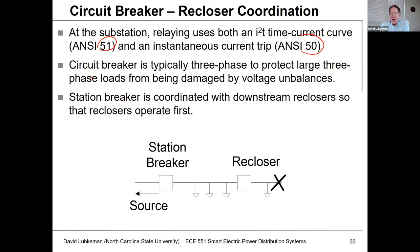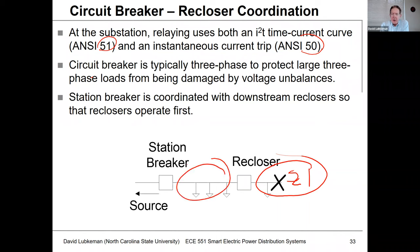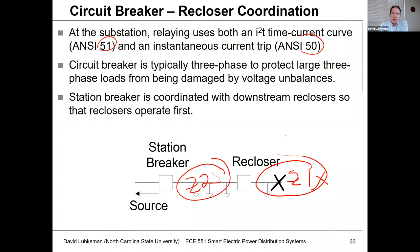As far as coordinating with downstream reclosers, we want the recloser to handle any faults below that device. In this simple example, the recloser protects zone one and the breaker protects zone two. Anytime there's a fault in zone one, we want the recloser to operate first so upstream customers are not outaged. For a fault in zone two, the breaker operates, and the breaker also serves as backup for the recloser if the recloser fails to clear a zone one fault.